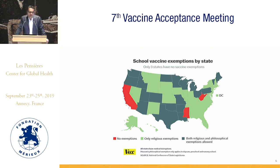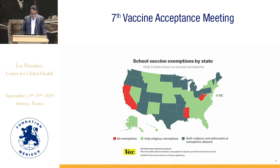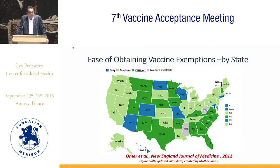In the US, there are three states with no exemptions for non-medical reasons; others have a flavor of religious-only or religious and philosophical exemptions. California at that time was one of the easiest states to get an exemption. We updated a CDC scale — originating from a paper by Jennifer Rota in the late 1990s — for the internet era. The principle is that the balance of convenience is evaluated based on the procedural difficulty of obtaining an exemption from a requirement, classifying them as easy, medium, or difficult.